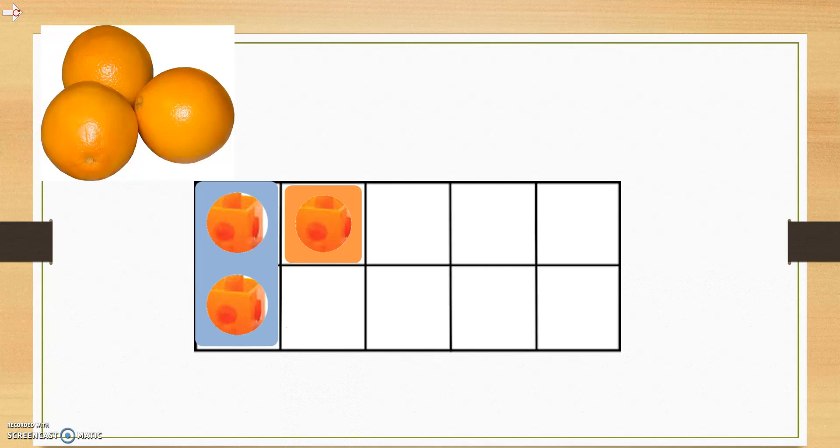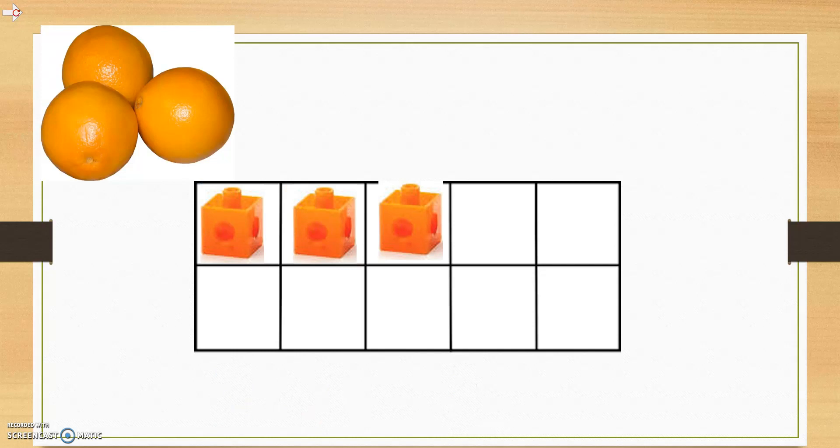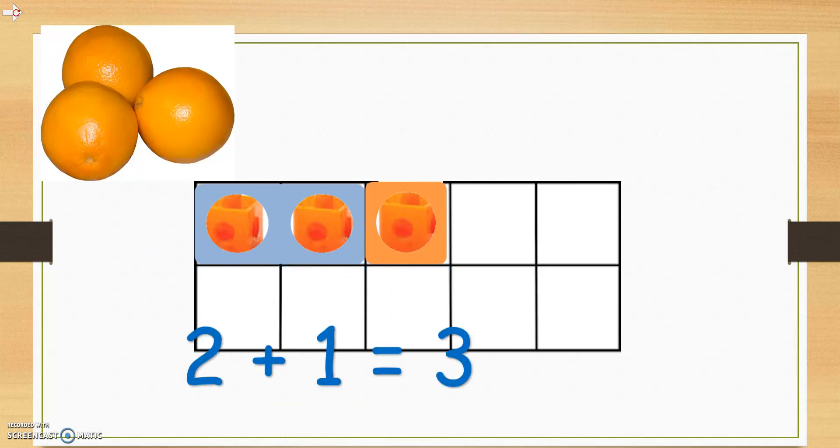Again, we are seeing the bond between numbers here, showing us that 2 plus 1 equals 3. If we put our cubes in a line on the 10 frame, we can still use our numericon to show the value. Here we see 2 and 1. And again, we see that 2 plus 1 equals 3.